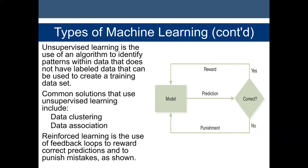Reinforcement learning is the use of feedback loops to reward correct predictions and to punish mistakes. We have a model, we apply data to the model, and if the decision is correct we give the model a reward feedback; if the decision is not correct, we punish it. It's like training a dog — if the dog does a good thing, you reward it; if it does a bad thing, you punish it.